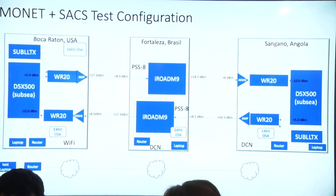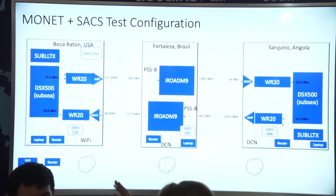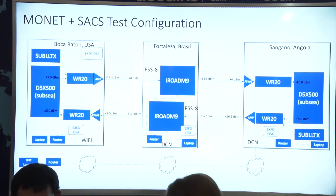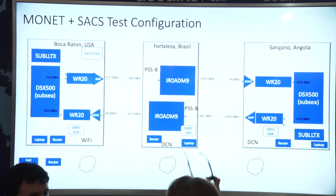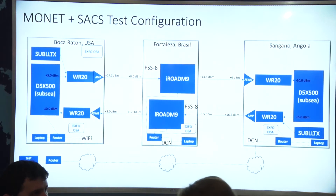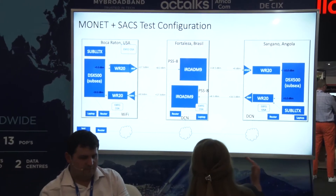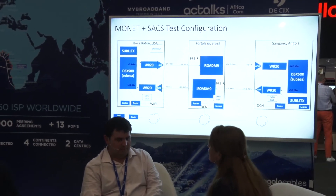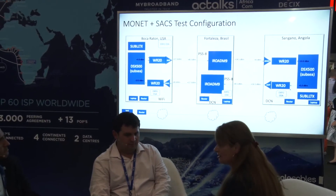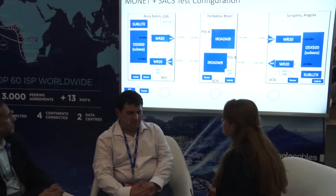The photonic service switch — the name is 1830. On the right and left sides are the terminal stations, where the traffic comes in and out. In the middle, we're using a bypass node based on Rodem technology. At the terminal sides, you can see our photonic service engine coherent cards. In this specific case, we use the D5X500.